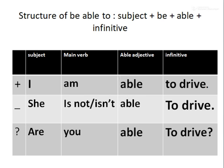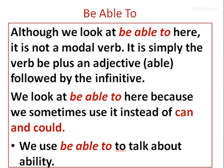Structure of 'be able to': subject + be + able + infinitive. In positive form: I am able to drive. In negative form: she is not, or isn't, able to drive. In interrogative form: are you able to drive? Although we look at 'be able to' here, it is not a modal verb — it is simply the verb 'be' plus an adjective followed by the infinitive. We look at 'be able to' here because we sometimes use it instead of 'can' and 'could.'